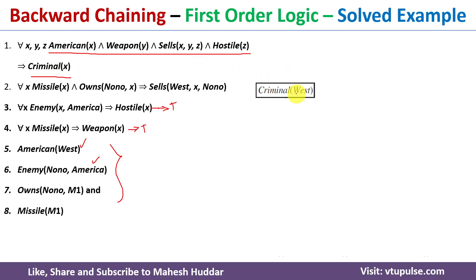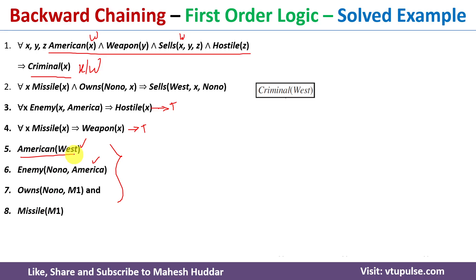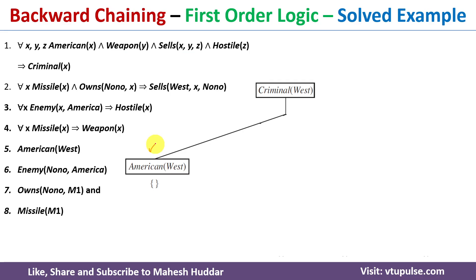The goal is Criminal West, and the right-hand side of the rule is Criminal x, so we replace x with West everywhere. This gives us premises: American West and Sells West. We try to prove each premise is true. Starting with the first one — American West is present on the premise side, and if you look at the facts, American West is also there. So American West is true.